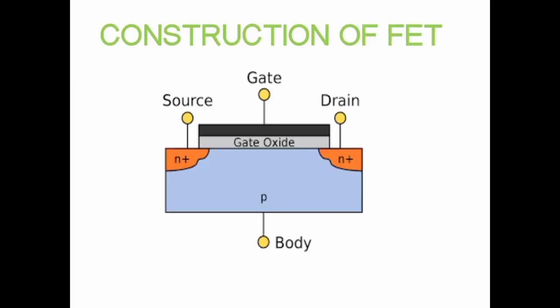This is the construction of a field effect transistor, which consists of a channel made of a semiconductor material with two electrodes connected at either end, namely the drain and the source. The flow of current between the source and drain terminals is controlled by a third electrode known as the gate, which is placed close to the channel.